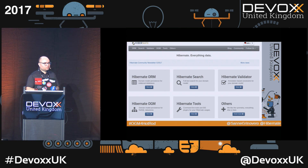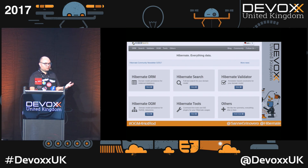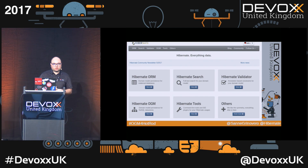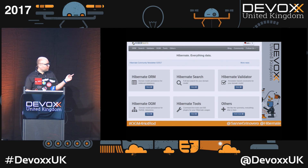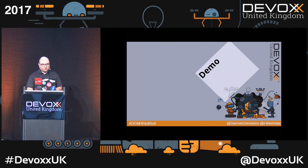We have Hibernate Validator, which is not so much about persistence but very related to your data — making sure that the stuff you're storing is valid data — and it is the reference specification for the Bean Validation Standard. And Hibernate OGM is the new project we're talking about here.